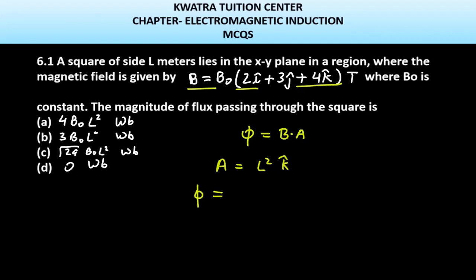φ equals B·A. What is B? B is B₀(2î + 3ĵ + 4k̂). Dot A, where A is L²k̂.